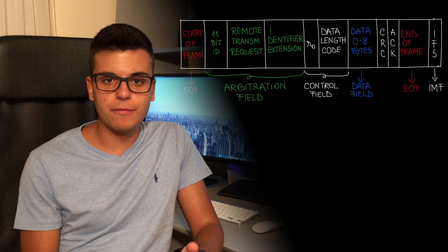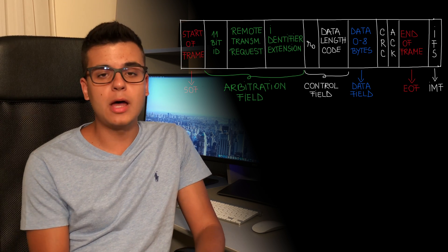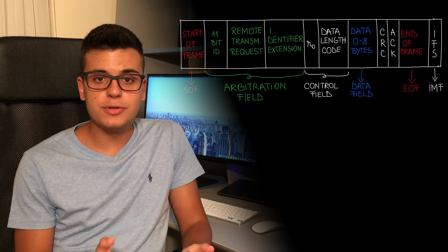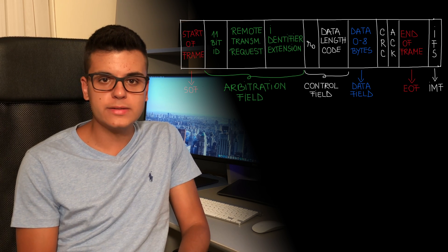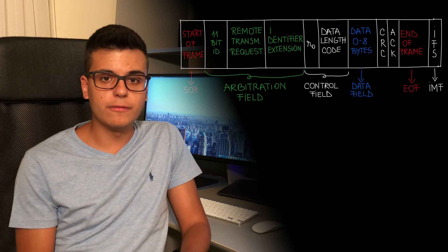The start of frame marks the beginning of a new message and allows all nodes on the bus to synchronize. The arbitration field contains an 11-bit identifier for the message and also an RTR or remote transmission request bit, which is dominant when we are requesting information from another node. Unlike SPI or I2C where a different line or address signals which device we're talking to, this concept doesn't exist with CAN bus — each message is broadcast on the entire network. The 11-bit message identifier is used as a sort of topic, allowing nodes to ignore messages they're not interested in.